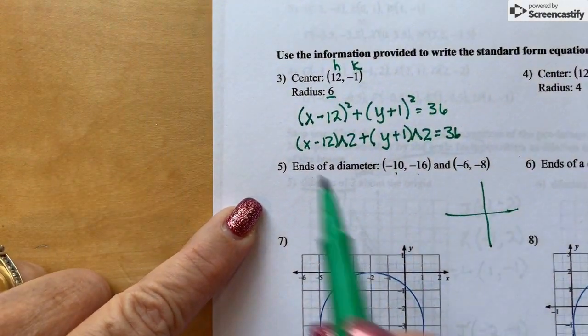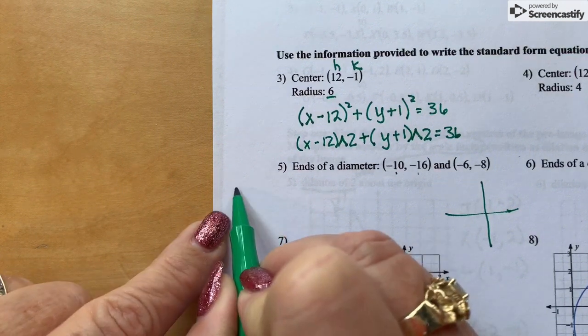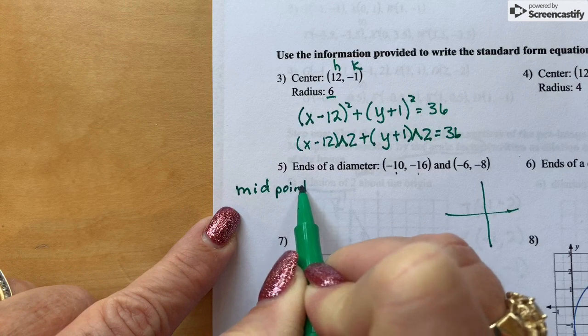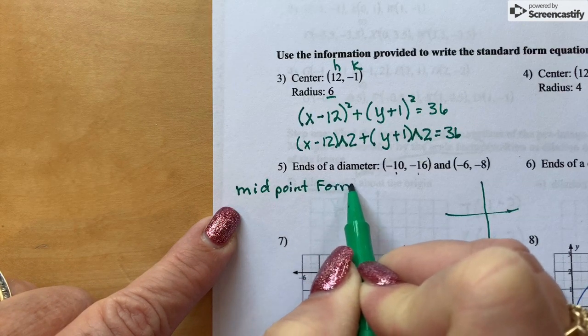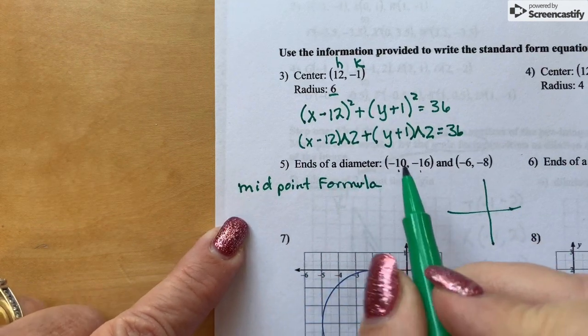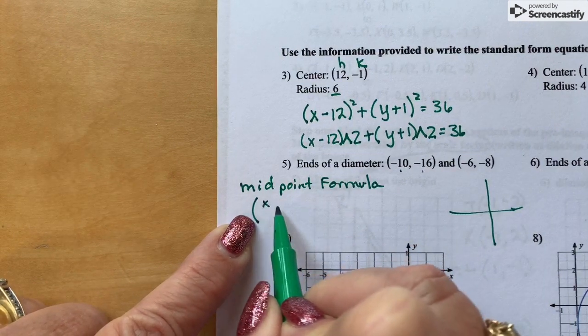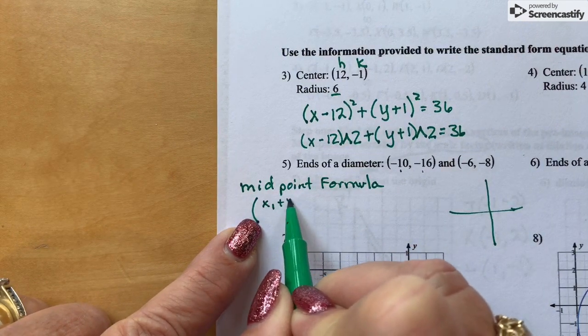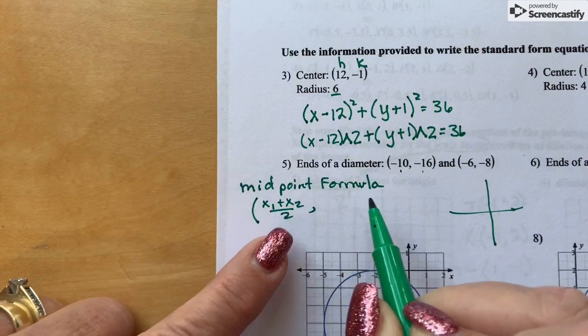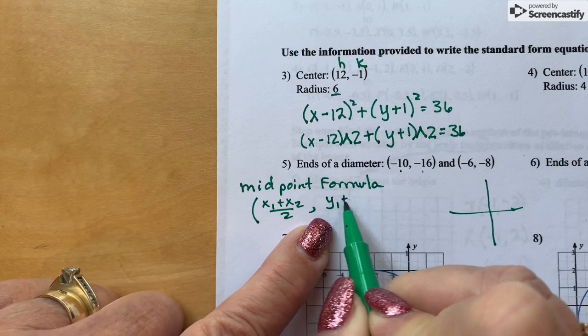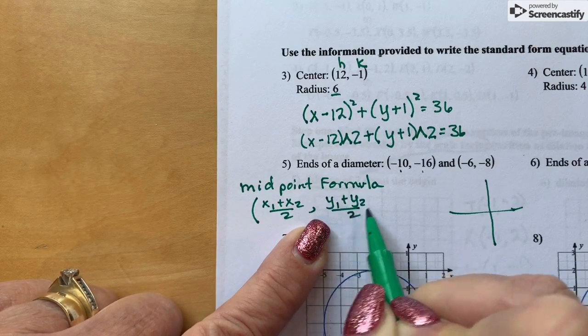So let me just remind you of what the midpoint formula is. So midpoint formula is x1 plus x2 divided by 2. It's just the average between the points. And then y1 plus y2 over 2.